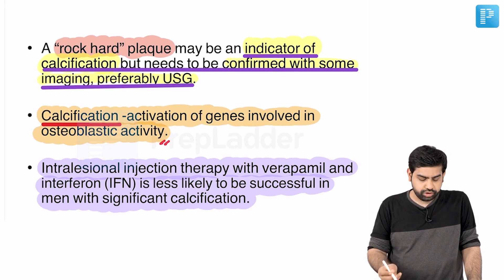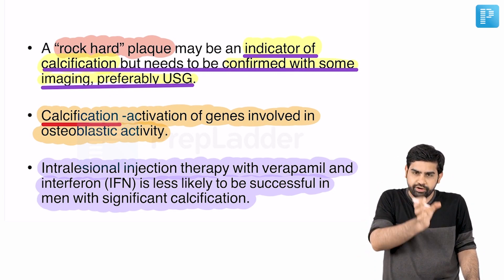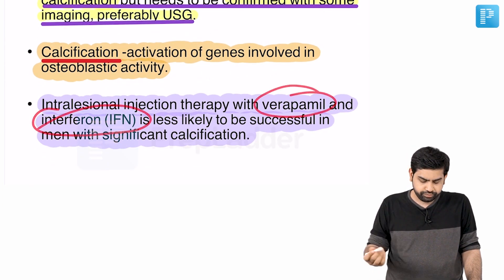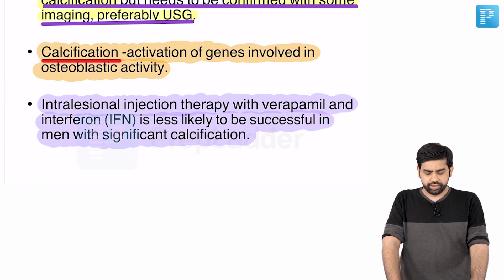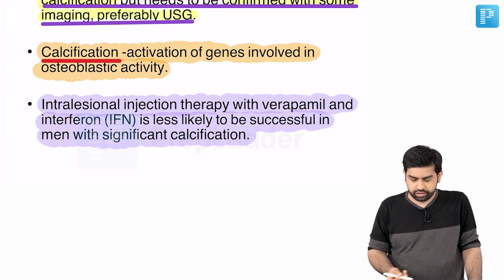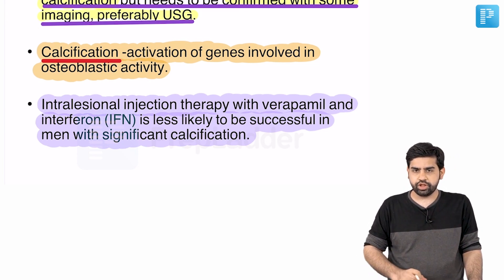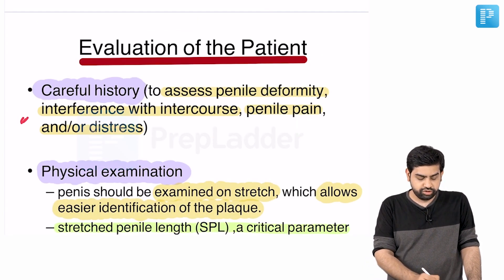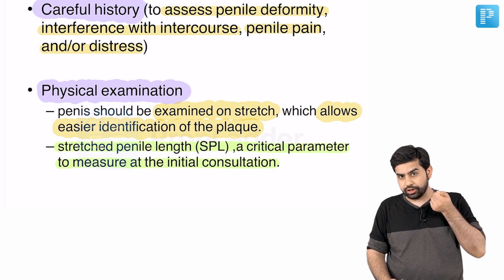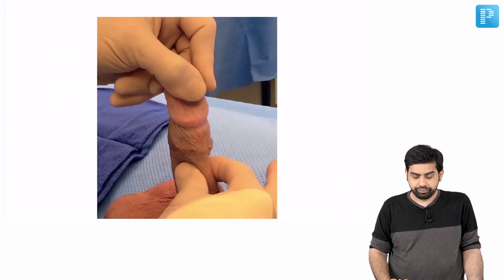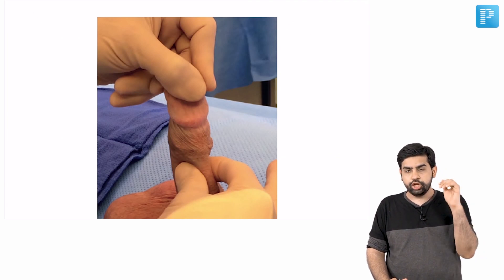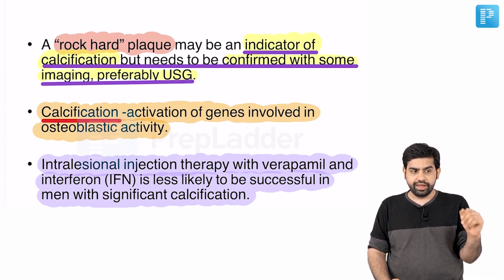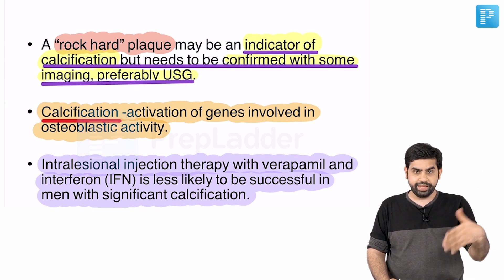Calcification is an activation of genes involved in osteogenic activity. Sometimes the plaque can have osteogenic de-differentiation leading to calcification. Even intralesional verapamil and interferon are not really helpful in treating or preventing calcification or reducing the severity of the plaque. For the examination, remember: take the history, perform physical examination, stretch the penis, note the stretched penile length, palpate the plaque, and look for calcification — any rocky hard structure felt in the plaque is probably calcification.